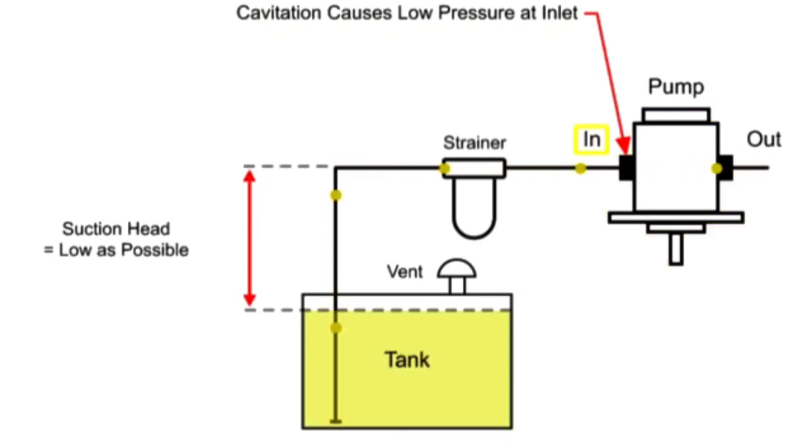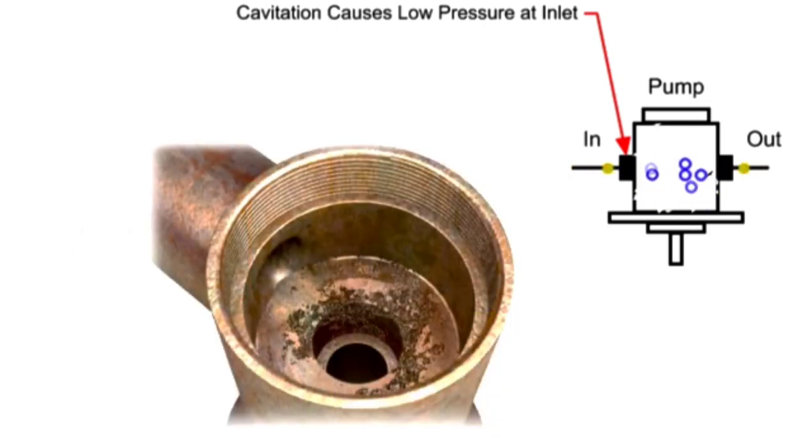When the pressure at the pump inlet drops below the vapor pressure of the liquid, vapor bubbles form and the fluid appears to boil. When the bubbles collapse, they can damage the pump by removing small pieces of metal. This is called pitting and can cause permanent damage to the pump.